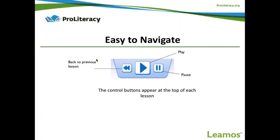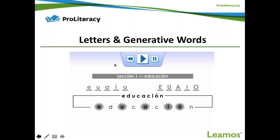The navigation panel uses control buttons very similar to what learners see on home devices like CD or DVD players — just three buttons: go back, play, and pause. Each lesson is divided into six sections, and all include audio instructions. At the beginning of each lesson a new letter is introduced. In lesson one, section one, you can see all the vowels being reviewed. You will now listen to a brief introduction of the lesson — the audio is in Spanish, so please have your volume up.